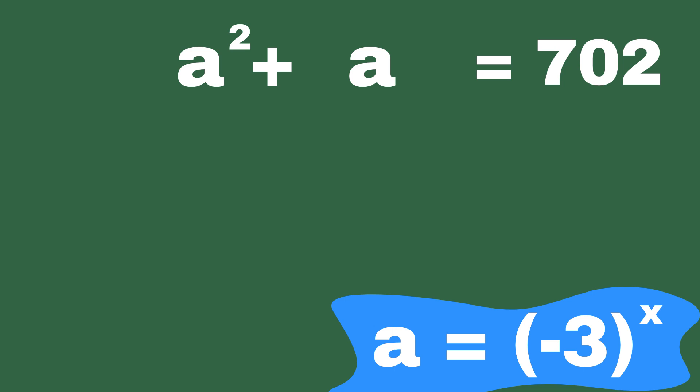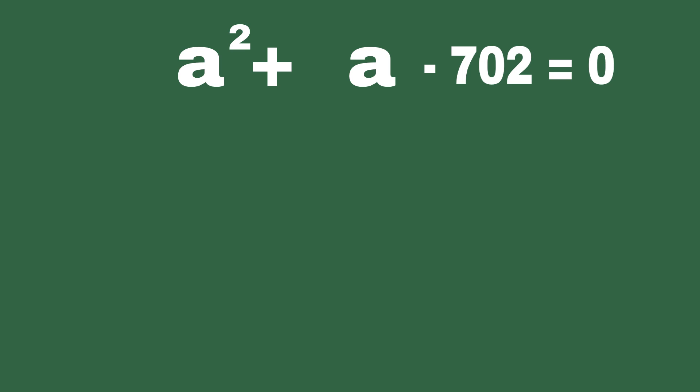And of course, we all know how to solve a quadratic equation, it's like a well-practiced routine by now, right? First, we do the classic move, we shift all the terms over to the left side of the equation, so that the right side becomes zero. This step is like clearing the stage before the big performance, it makes everything neat and ready for action. Once we've got everything on the left side, we're all set to apply the quadratic formula, that magical equation that helps us solve for the unknowns. So let's do the math.